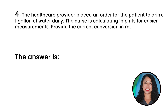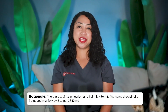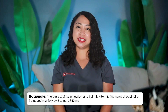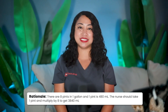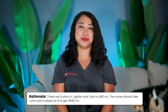Question 4: The healthcare provider placed an order for the patient to drink 1 gallon of water daily. The nurse is calculating in pints for easier measurement — provide the correct conversion in milliliters. The correct answer is 3,840 milliliters. Rationale: there are 8 pints in 1 gallon and 1 pint is 480 milliliters. Multiply 480 milliliters by 8 to get 3,840 milliliters.